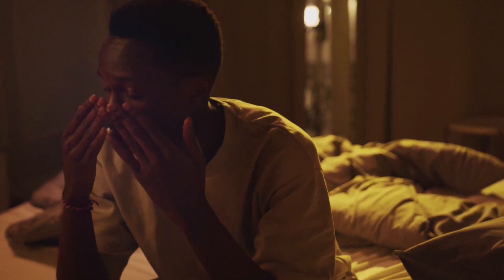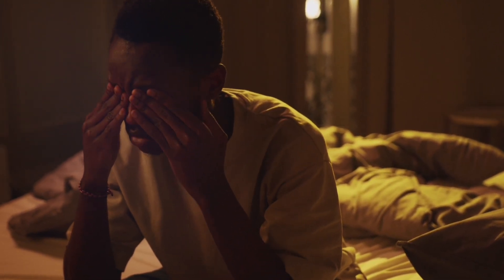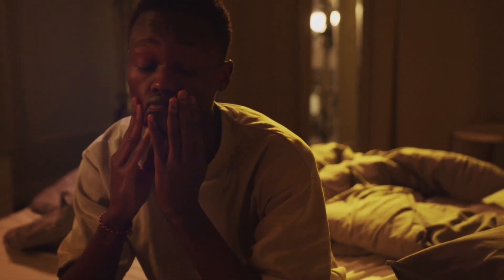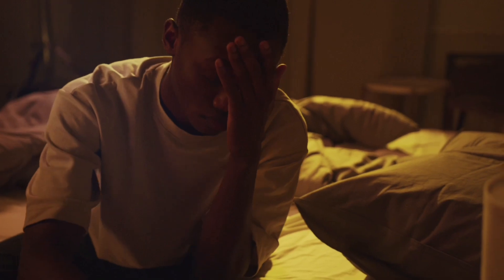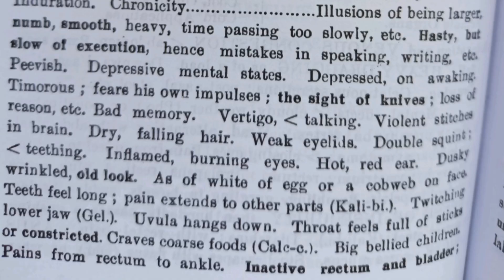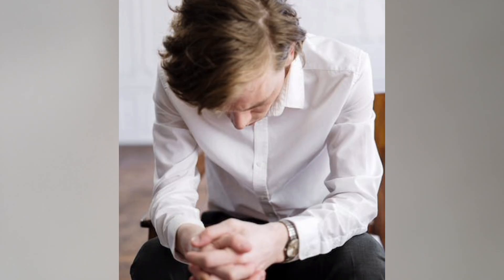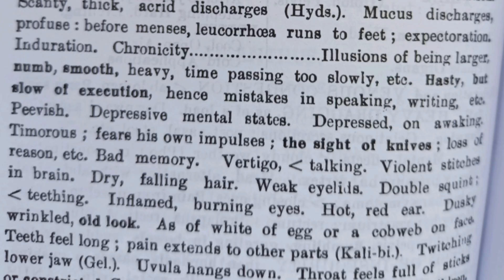The Alumina patient tries to work quickly but in actuality cannot get the work done. Mistakes occur in speaking and writing. Alumina shows symptoms of depression — the patient lacks confidence and fears his own impulses. On seeing a knife or blood, suicidal impulses arise. Hasty but slow of execution; hence mistakes in speaking, writing, etc. Peevish, depressive mental states, depressed on waking. Timorous — meaning showing or suffering from nervousness or lack of confidence. Fears his own impulses — the sight of knives, fear of loss of reason, etc. Bad memory.